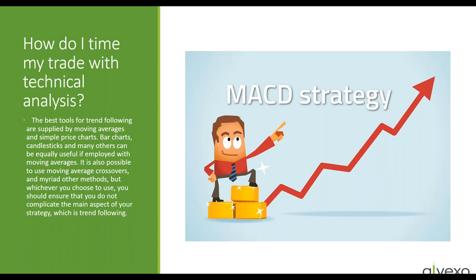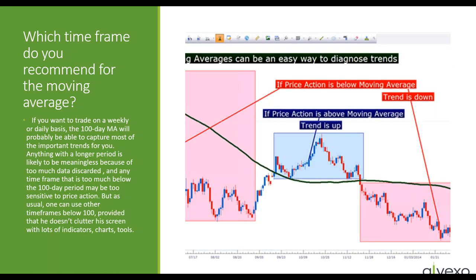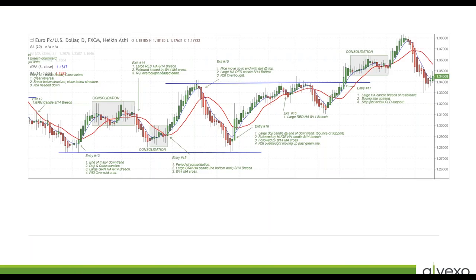The best tools for trend-following are supplied by moving averages and simple price charts. Bar charts, candlesticks, and many others can be equally useful if employed with moving averages. We can also use our trend-following method to set stop-loss and take-profit orders. A stop-loss can be placed at a short distance above or below the trend line, whether provided by a moving average or a simple line drawn on a chart. The trend-follower should not realize profits until there is a good reason to do so — the purpose is to focus on underlying price dynamics by stripping out volatility and short-term movements. There is little logic to realizing profits in response to fluctuations that are irrelevant to the main action of the trend — in other words, during eases.